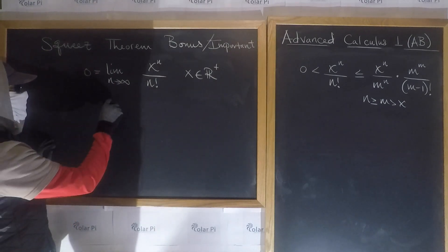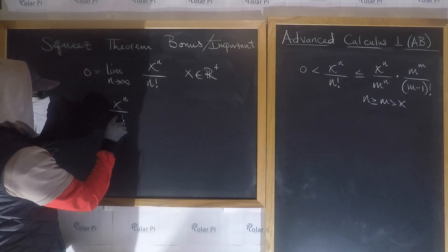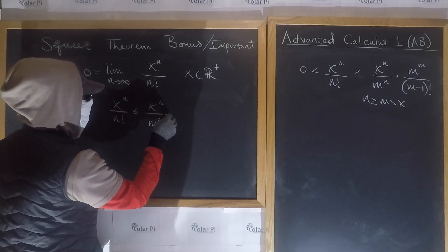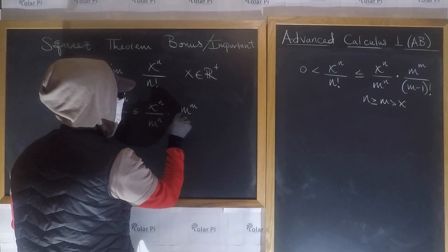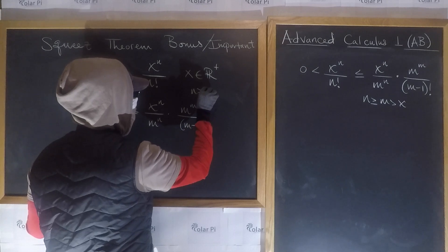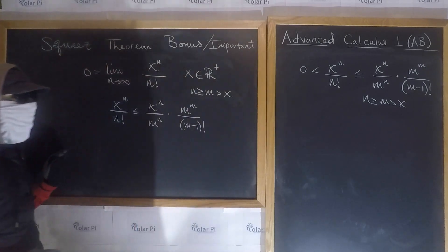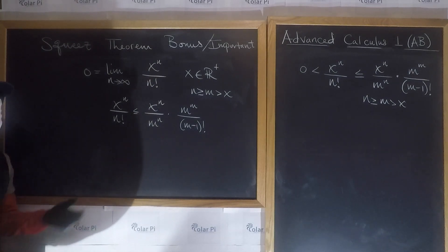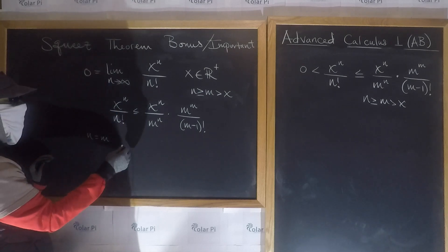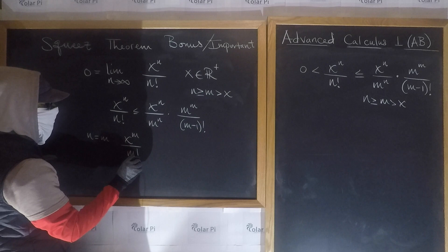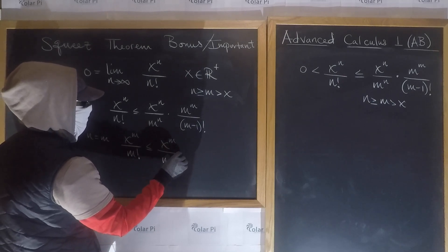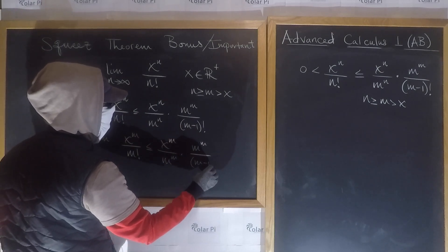So why is that true? We have x to the n over n factorial is less than or equal to x to the n over m to the n, times m to the m over m minus 1 factorial, with the qualifier that n is greater than or equal to m, and both n and m are bigger than x. First, let's consider the situation when n and m are equal. If n equals m, then the left-hand side can be written as x to the n over m factorial, and we need this to be less than or equal to x to the m times m to the m over m minus 1 factorial.